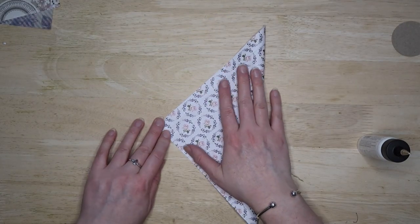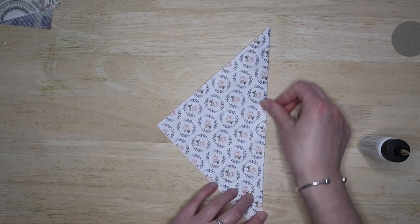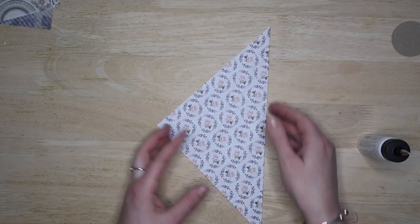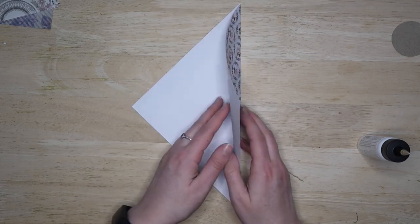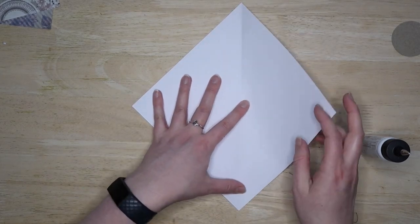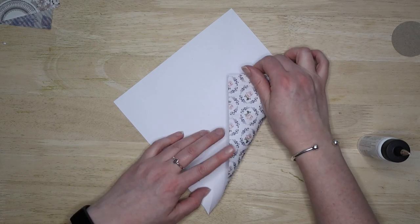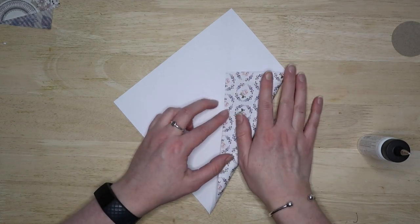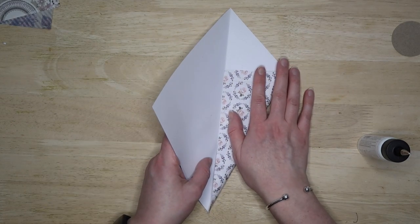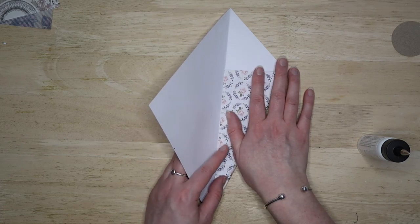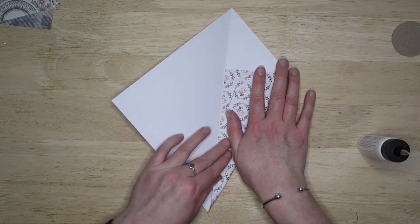Fold that over. So again with there being so much folding involved in this, the thinner the paper the easier it is to control. Tilt that over so that I've got the shadow and you can see where the center line is.